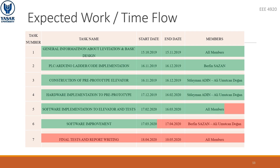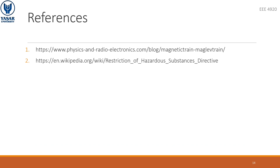Here are the expected work and time flow details. The first four work package sections have been completed, and 75% of the fifth package has been completed since we were in the process of applying the code parts to the pre-prototype. We will continue to develop the sixth software work package to make it more useful and effective. Finally, I want to end the presentation with the reference part. Thank you for listening to us. I wish you healthy days.